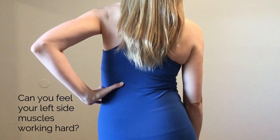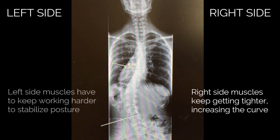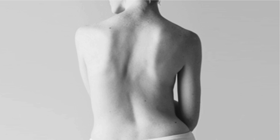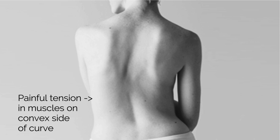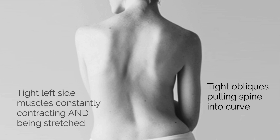So in this example, as this woman's right side obliques became tighter and tighter, increasing her curve, the muscles on her left side had to continue to work harder and harder to keep her standing upright. So if your curvature is similar to this, muscles on both sides of your curve are tight. But you probably feel painful tension in the muscles on the convex side of your curve because those muscles are being stretched at the same time as being contracted. The tight obliques on the right side are pulling the spine into the curve and stretching the muscles on the left side, but those left side muscles can never stop working because if they do, you'll fall over.